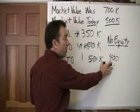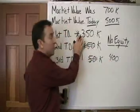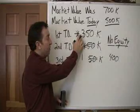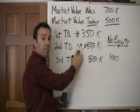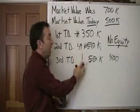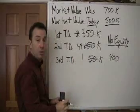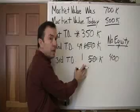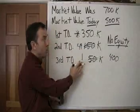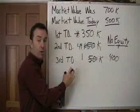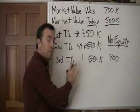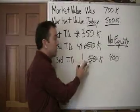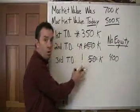A $400,000 offer would give the first lender payoff in full of $350,000, the second a $49,000 payoff, and $1,000 to the third lender. This is why it is so critical to know all the loans and know the position of the foreclosing loan. If you're going to make offers to owners in default with a short sale, you've got to know all the loans.